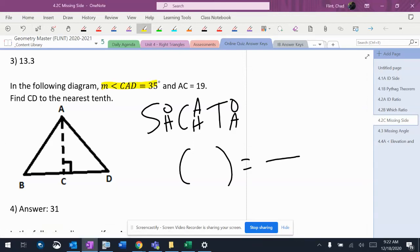So I'm going to highlight the angle CAD. CAD is right up here in that corner right there. AC is 19, so that's 19, and it says find CD, which is over there.